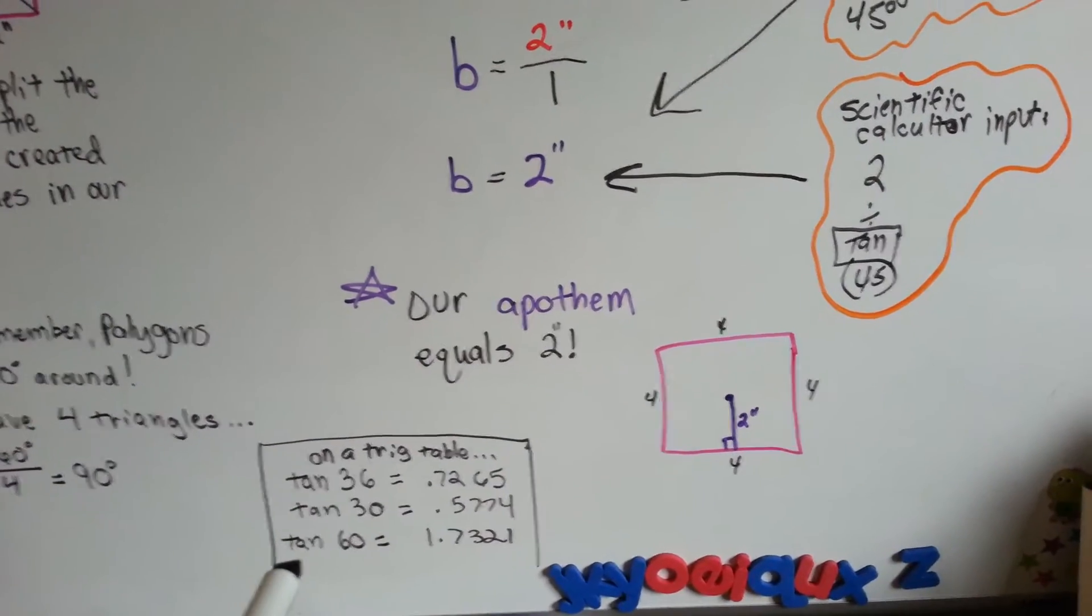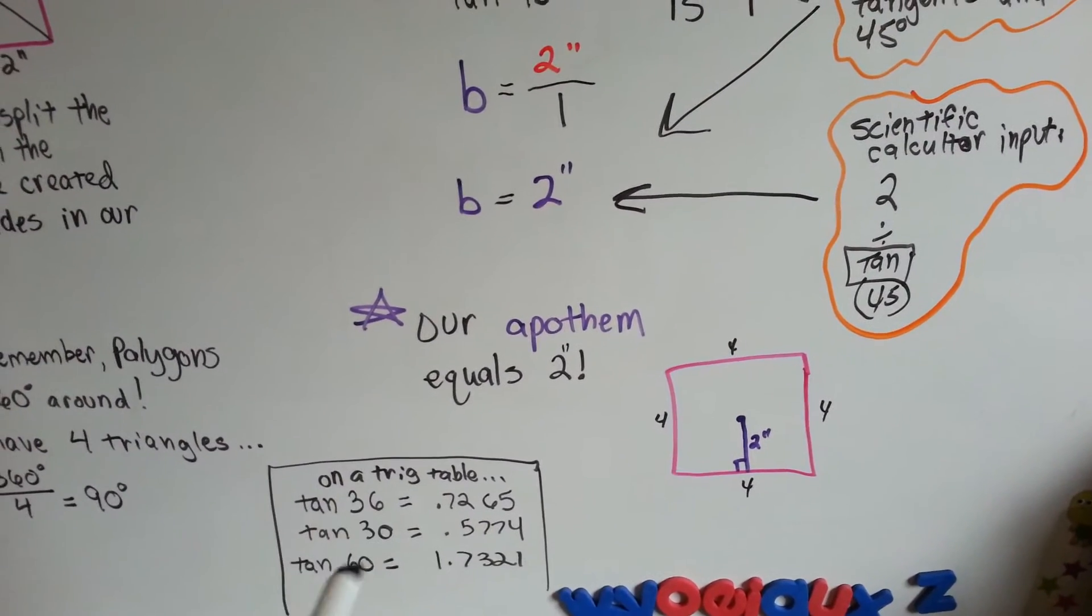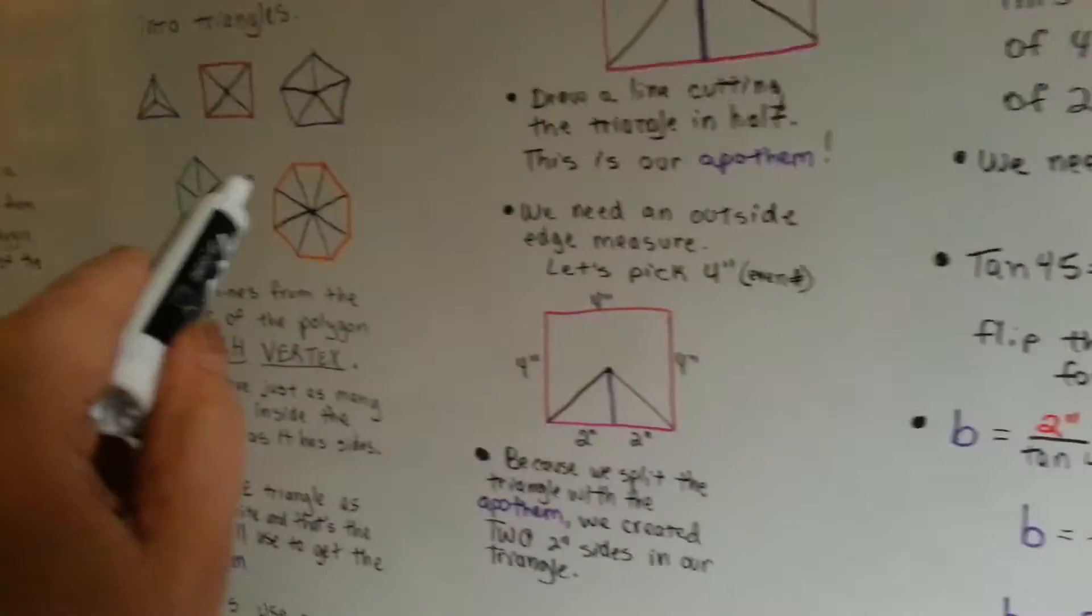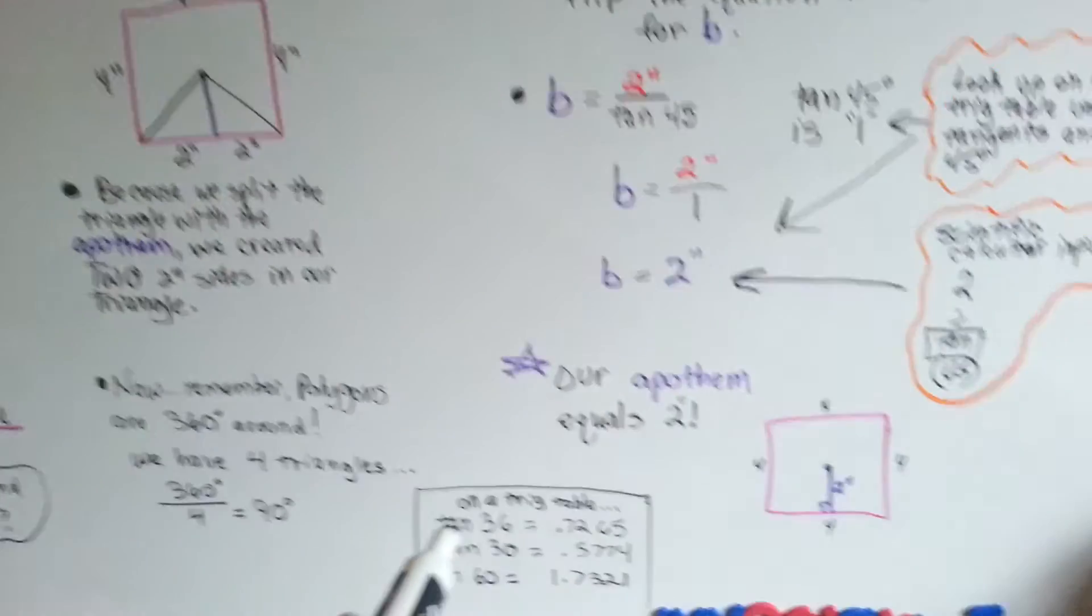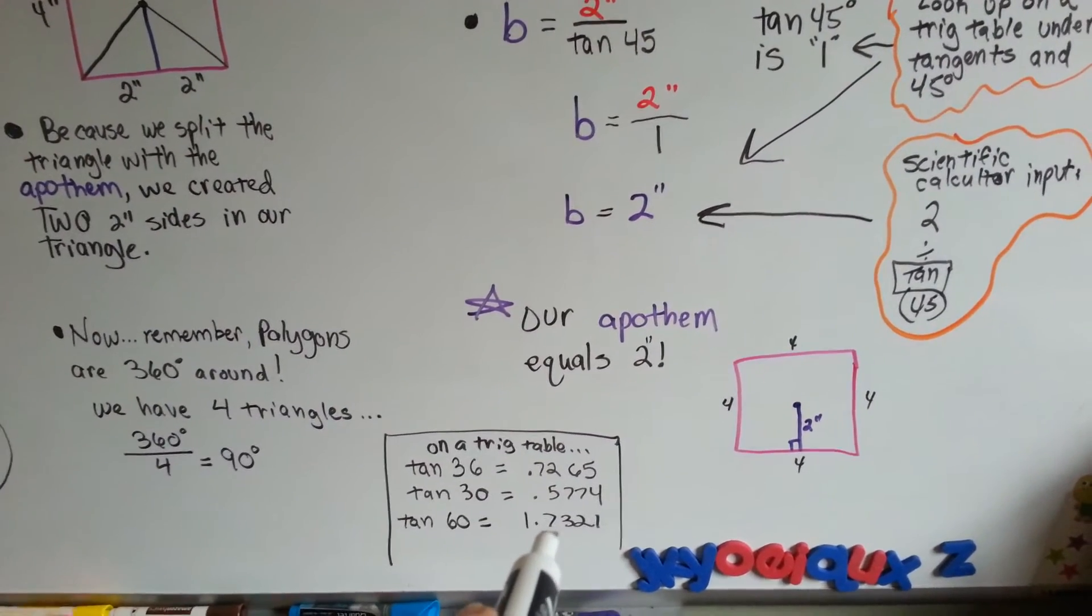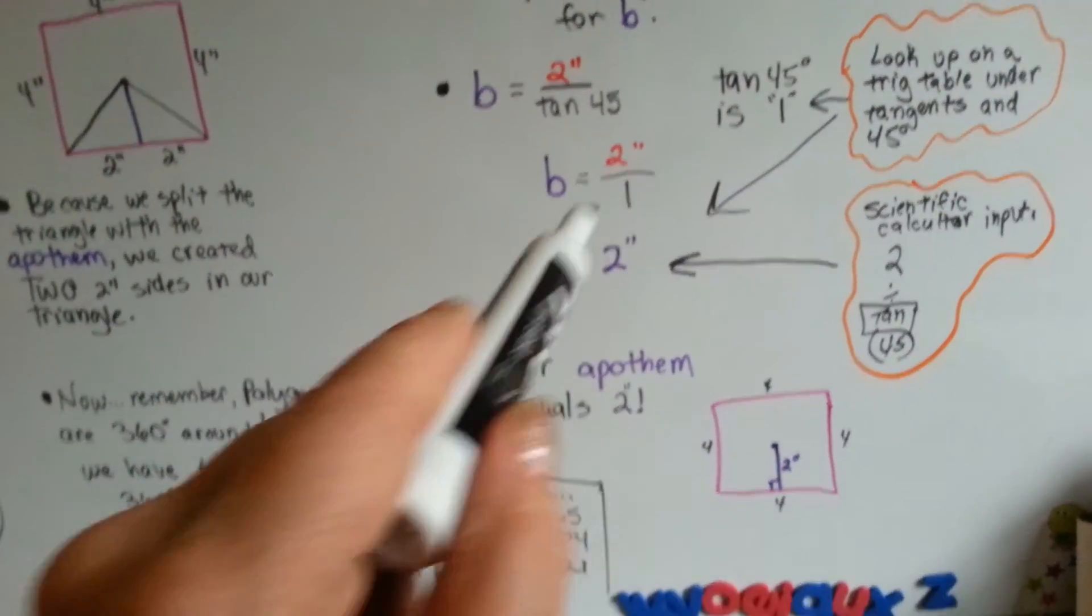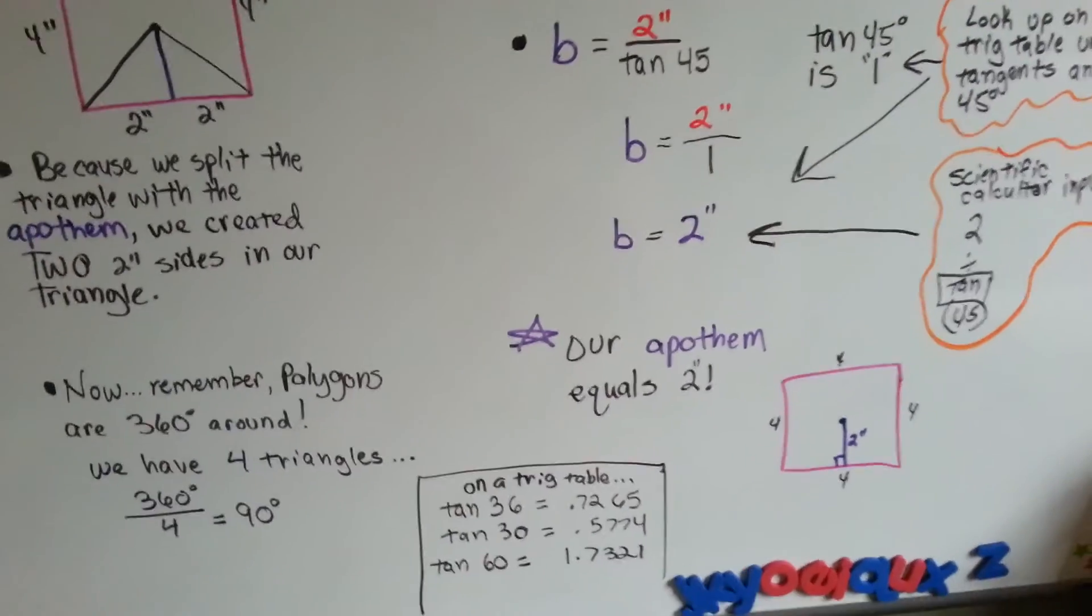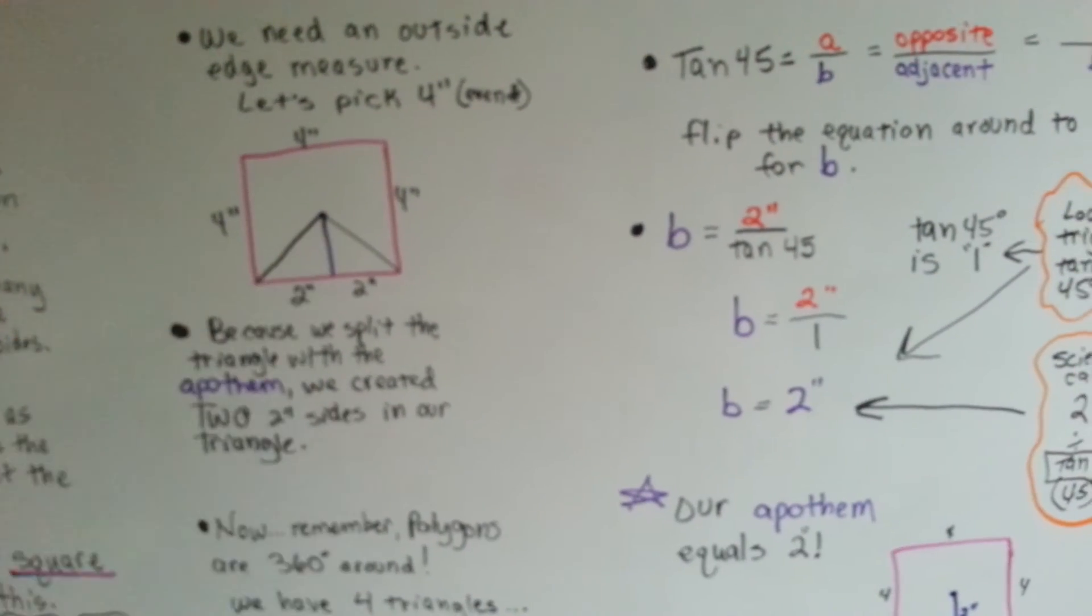Now, on the trig table, tangent 36 would come out as this decimal, 0.7265. This would be the degree measure of the inside angle of the triangles that you created. So, let's say you did one of these other ones. If you did a triangle over here, you would end up with 120, and half of that would be 60, wouldn't it? So, you'd end up using this decimal point to do this part. It would have been 2 inches divided by that, by 1.7321. And then that would give you the measure of your apothem. So, this is going to depend on what the internal degree measure is inside of here, right at this point.